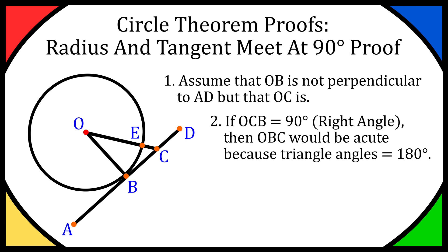So if angle OCB equals 90 degrees — a right angle — then angle OBC would be acute. In a triangle, all angles add up to 180 degrees. If one angle is 90 degrees, the other two add up to 90 degrees, and each of those must be at least a fraction of a degree, so neither of them can be 90 degrees or bigger.